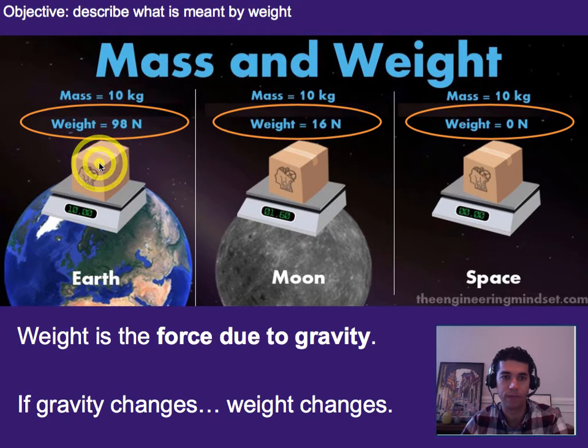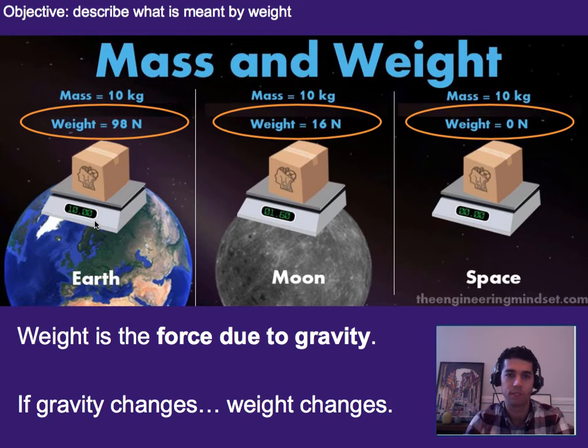So here, the weight of this box on Earth might be 100 newtons. But the weight of this box on the Moon would only be 16 newtons. And the weight of this box in outer space, far away from all other planets, would be 0 newtons. That's because gravity here is 0. Gravity here is about 1.6 meters per second squared. And gravity here is about 10 meters per second squared. So we can see that with gravity, the weight changes.